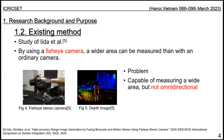In this paper, a fisheye camera is used as a stereo camera to measure distance, which enables measurement of a wider area than is possible with a normal camera. However, the angle of view of a fisheye camera is generally around 180 degrees, so two cameras cannot measure all directions.